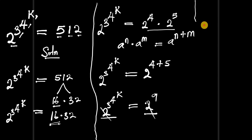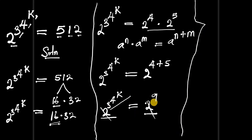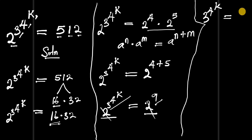After canceling the bases, we are left with the exponents: 3^(4^k) equals 9.